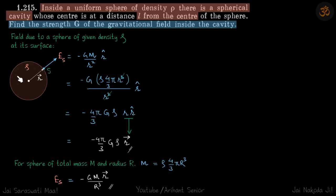Let's find the field due to a sphere of given density rho at its surface. That is given by minus GM by r square r cap, where this is the r vector from the center. Mass is rho into volume, so you solve that and you get minus 4 by 3 G rho r vector.